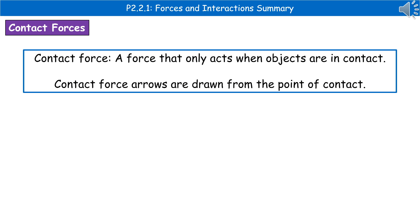The other type of force we could have are the contact forces. Contact forces only act when the objects are actually in contact with one another. When we represent a contact force on a diagram we draw the force arrow from the point of contact.